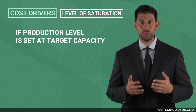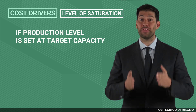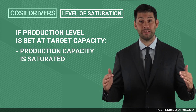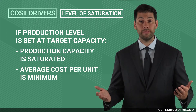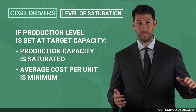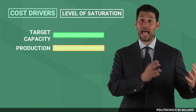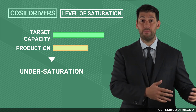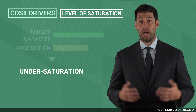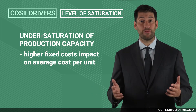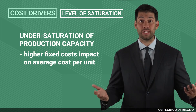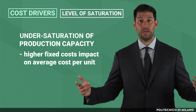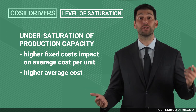So, if the actual production is set at the target capacity, such production capacity is saturated and the average cost per unit is minimum. However, whenever we produce less than the asset's target capacity, under-saturation may occur. In under-saturation, fixed costs like firm infrastructure and fixed assets cannot be spread on the maximum possible volume, so average cost per unit increases.